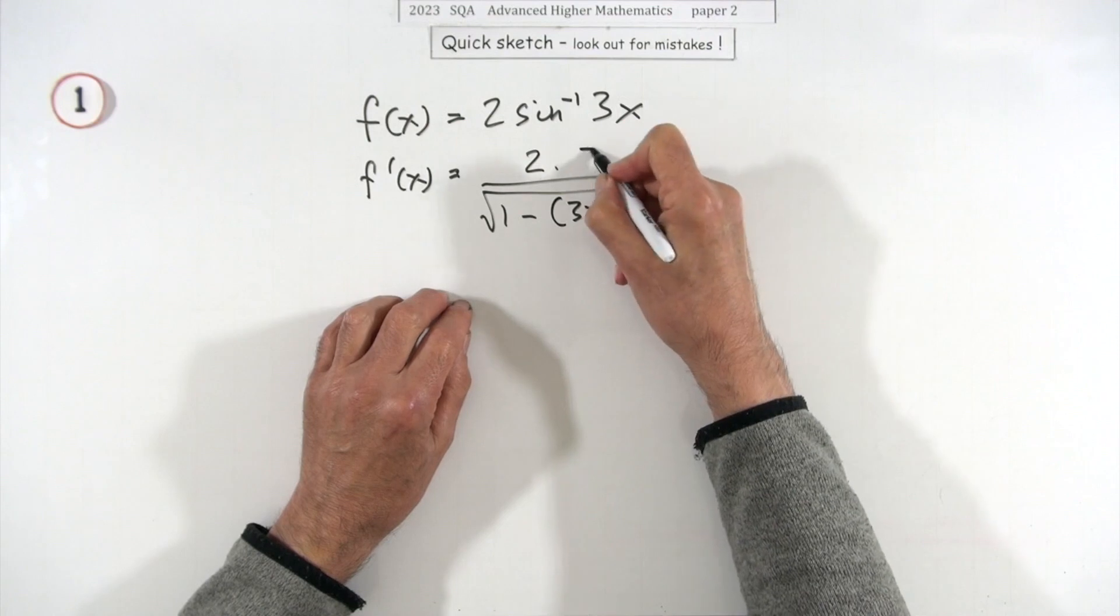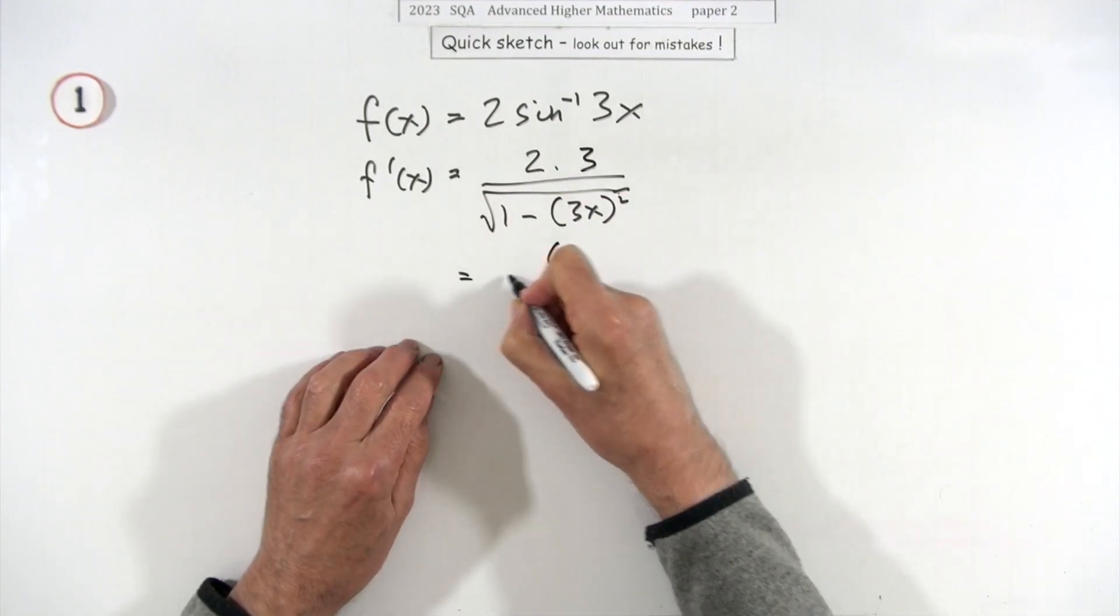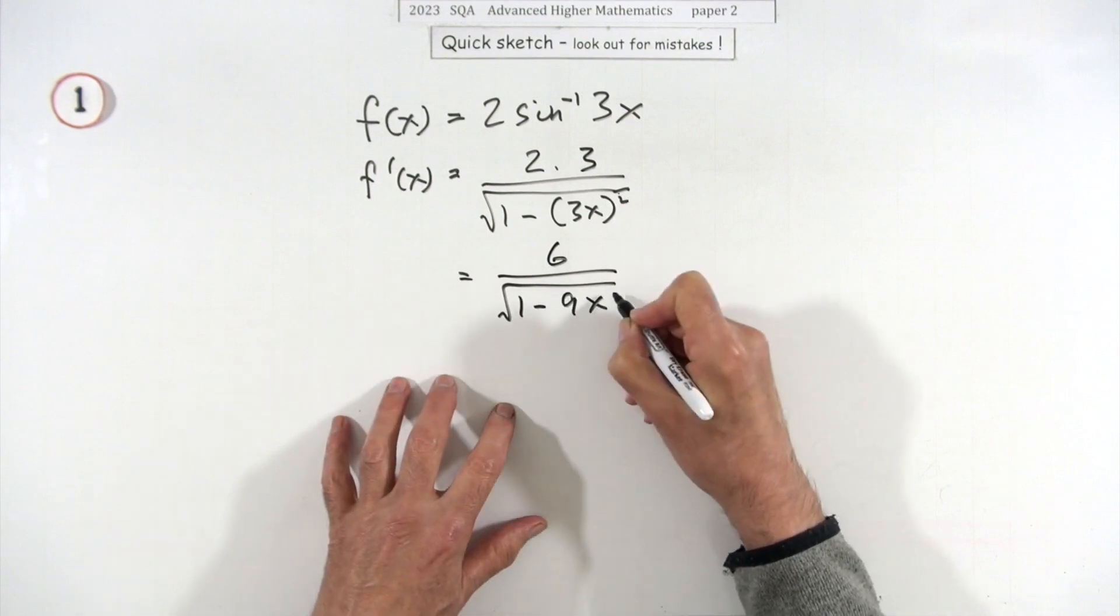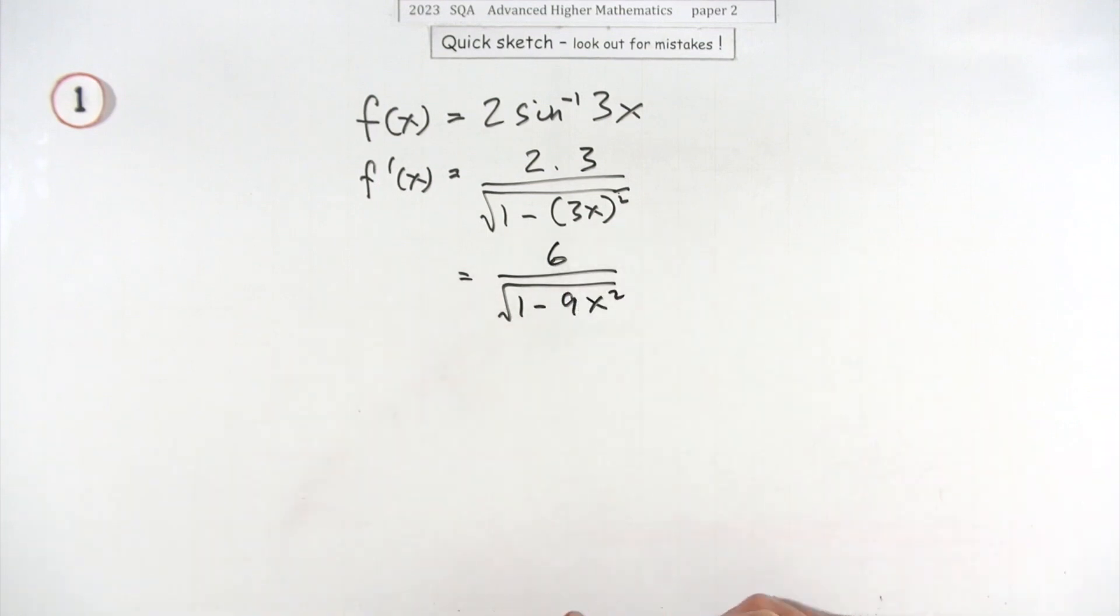Chain rule, so it'll be times 3. Just tidying that up, you'll have 6 over the square root of 1 minus 9x². That's a fairly quick two marks for a paper.